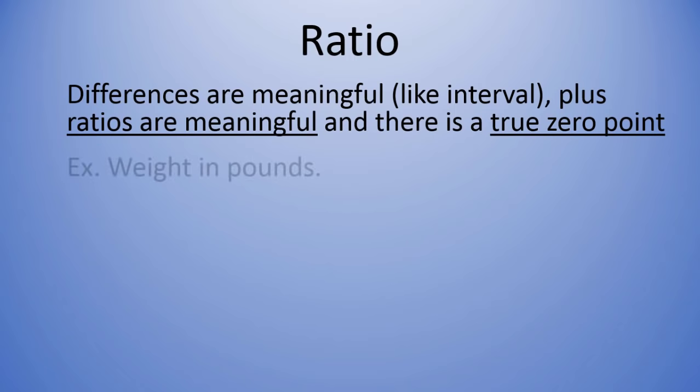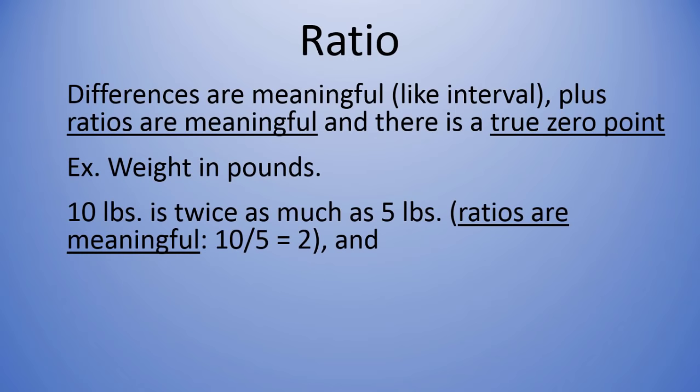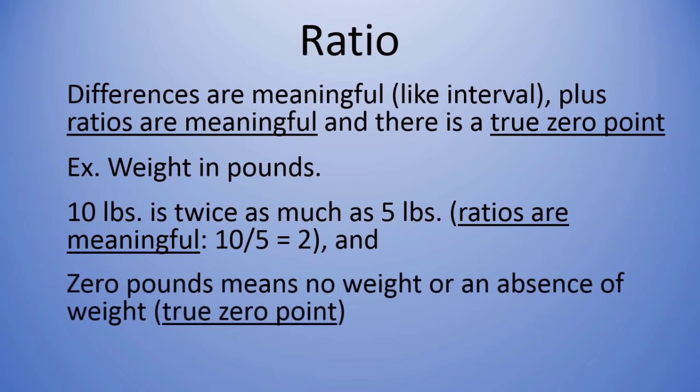An example would be weight in pounds. Here, 10 pounds is twice as much as 5 pounds, or 10 divided by 5 is 2, so that's a meaningful ratio. In addition to this, zero pounds means no weight or an absence of weight, so there's a true zero point. If something is zero pounds, that means it has no weight whatsoever.